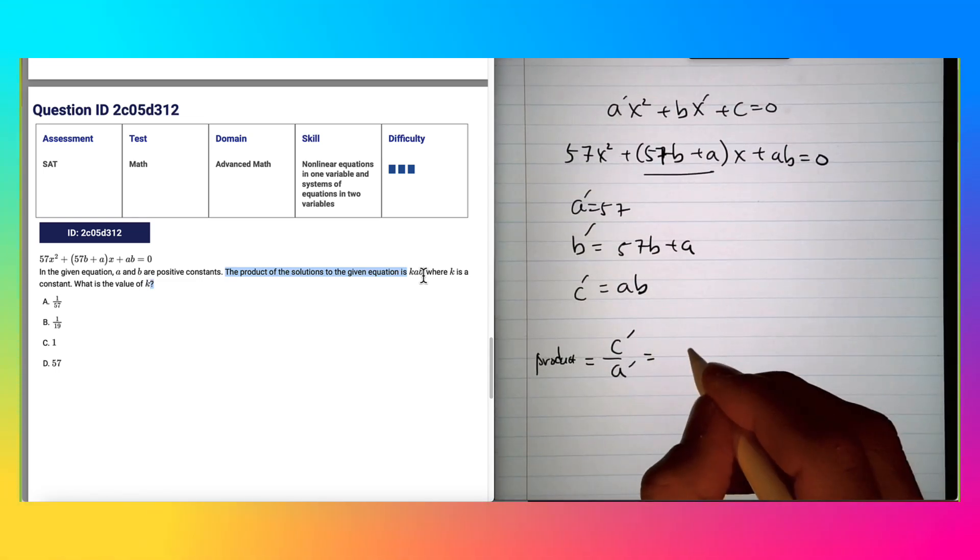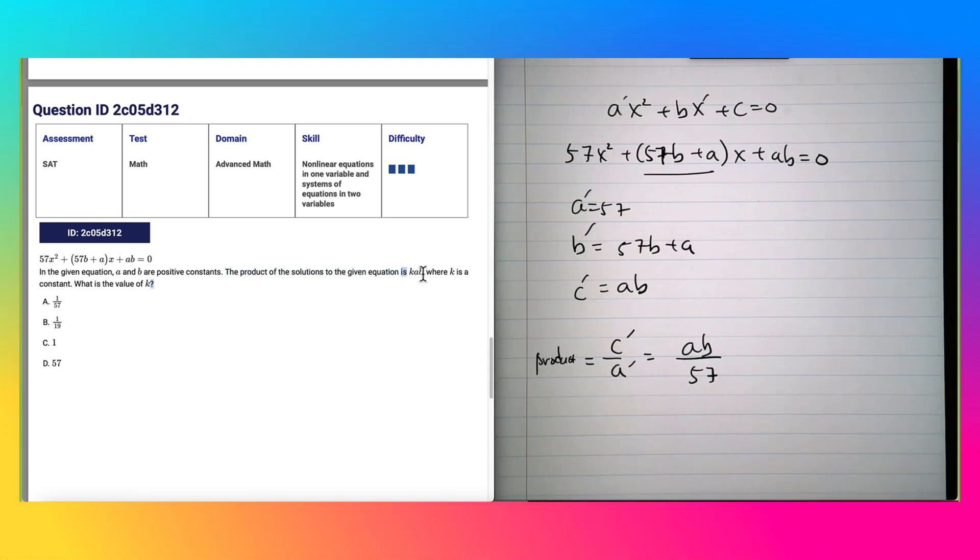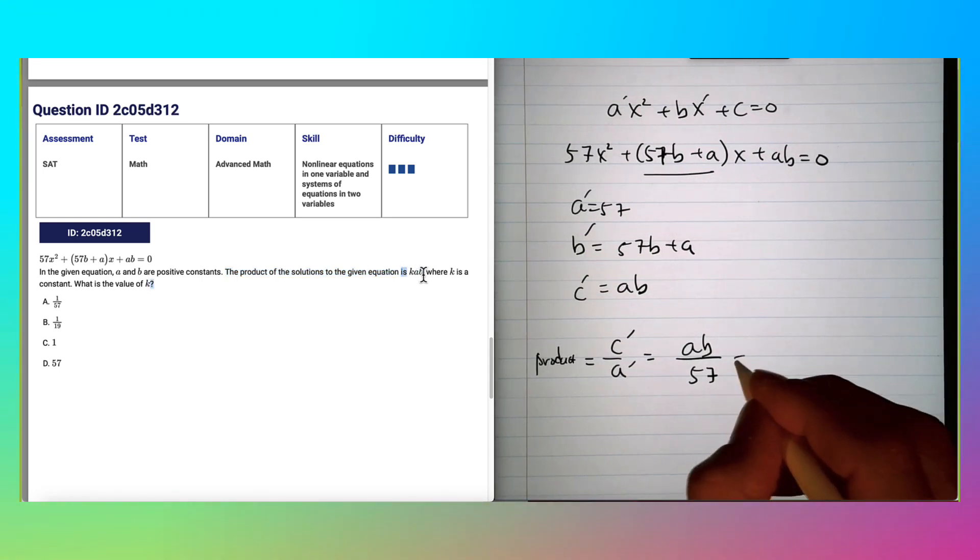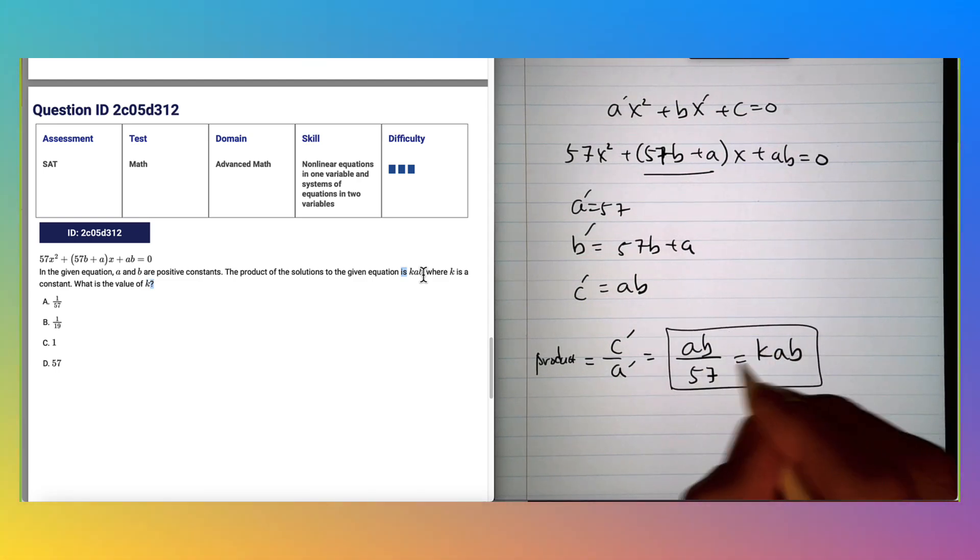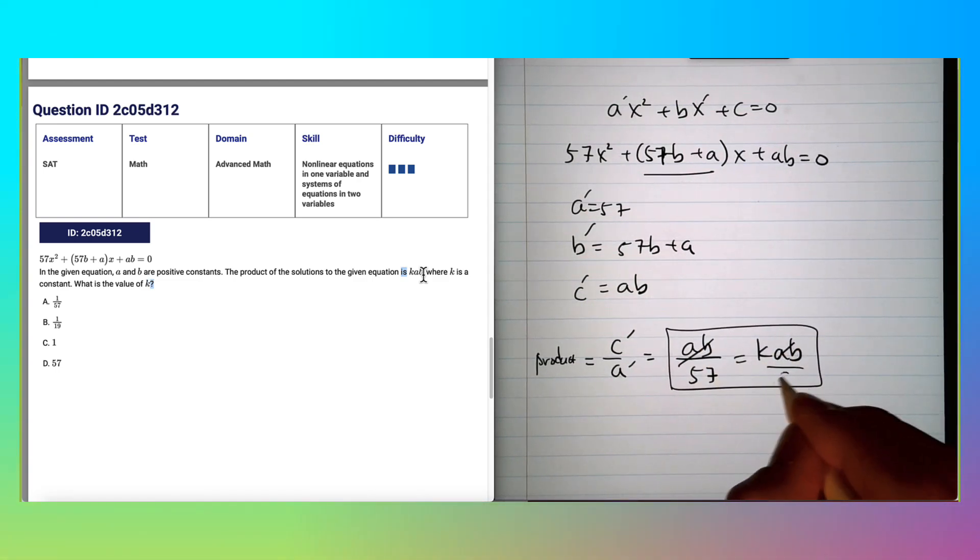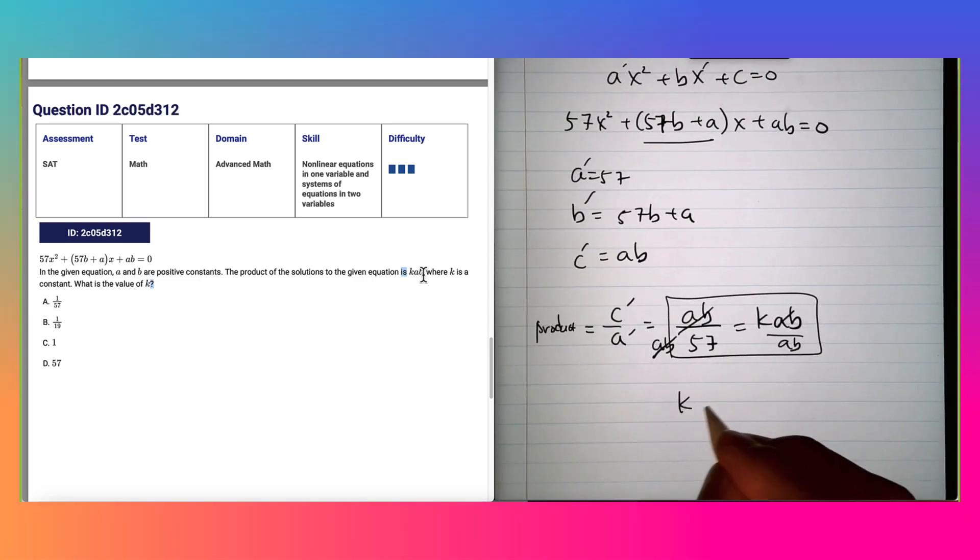So c prime equals ab and a prime equals 57. And they also told us that this product is kab. If you set this equal to kab and just focus on this, you can knock out the ab if you divide this side by ab. Then k is equal to 1 over 57.